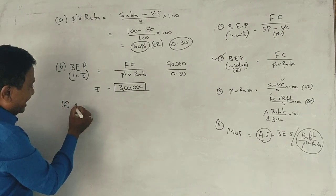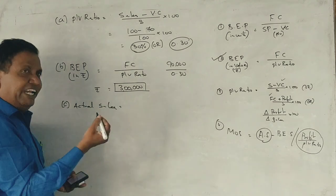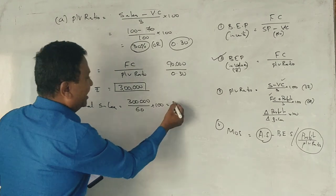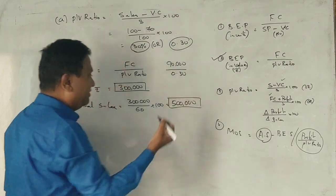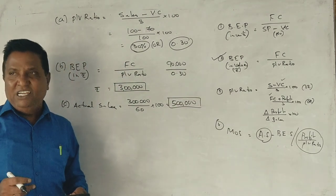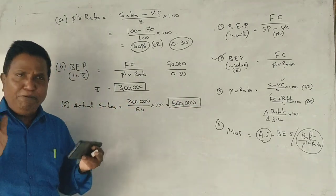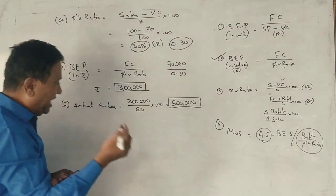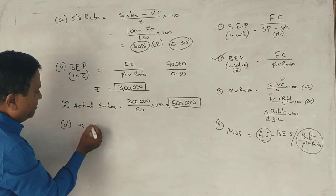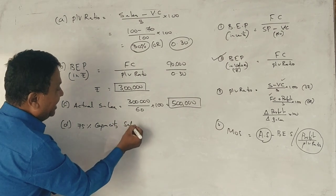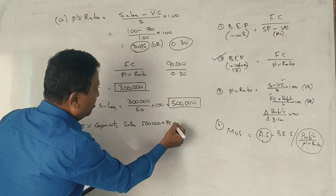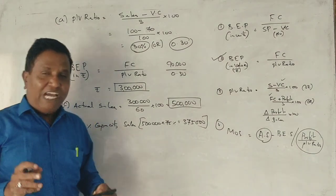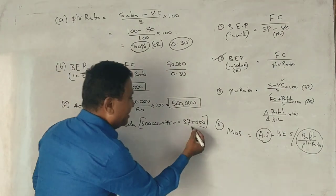Actual break-even sales at 60% capacity = 3 lakhs. 100% capacity sales = 5 lakhs. Therefore, 75% capacity sales = 5 lakhs multiplied by 75% = 3,75,000 rupees.